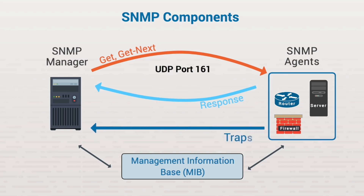The second option is to implement TRAPS. With TRAPS, you configure your SNMP agents with certain thresholds. Whenever the agent detects that a threshold has been exceeded, it sends an SNMP TRAP message to the SNMP manager on UDP port 162, instead of waiting to be polled.